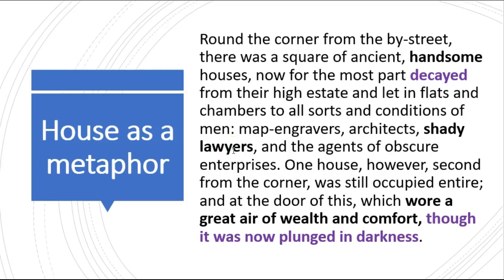One house however, second from the corner, 'was still occupied entire and at the door of this, which wore a great air of wealth and comfort, though it was now plunged in darkness.' Stevenson wants us to understand that Jekyll's house is a symbol of wealth and comfort, but look at the metaphor — it 'wore' this air, it appeared this way, like a disguise hiding the truth inside. Just like Jekyll's respectability is hiding the truth of Hyde which is inside him.